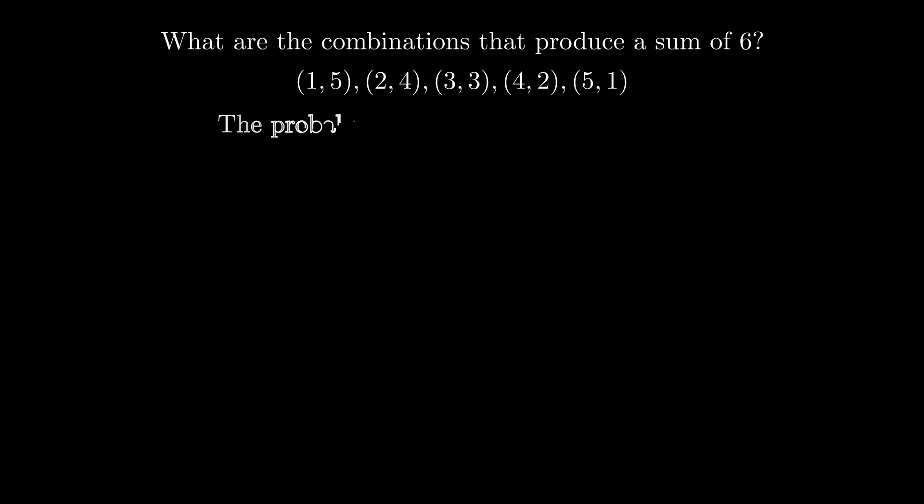First, we must ask, what are the combinations that produce a sum of 6? They are 1 and 5, 2 and 4, 3 and 3, 4 and 2, and lastly 5 and 1. So the probability of getting a sum of 6 is 5 out of 36.